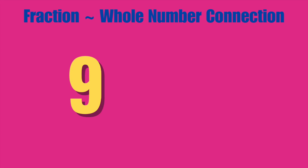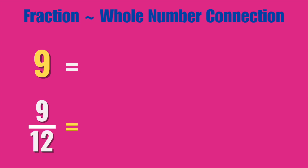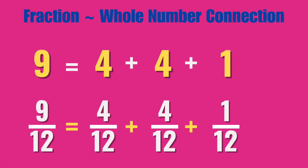One example of this connection is the whole number 9 and the fraction 9 twelfths. We want students to think if the number 9 can be decomposed into a sum of 4 plus 4 plus 1, then the fraction 9 twelfths can also be decomposed into the sum of 4 twelfths plus 4 twelfths plus 1 twelfth.